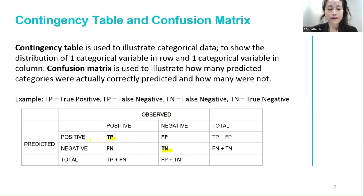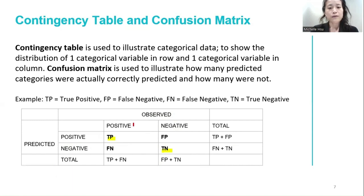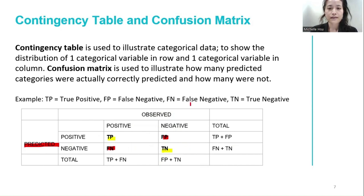Let me bring up the highlight in red. False positive and false negative are the scenarios when the model misclassifies the patient's actual disease status.